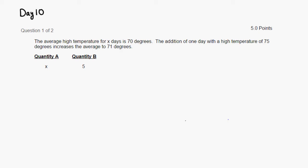Let's find the sum of the temperatures for X days. Since the average is 70, 70 times X will give you the sum of the temperatures for X days.